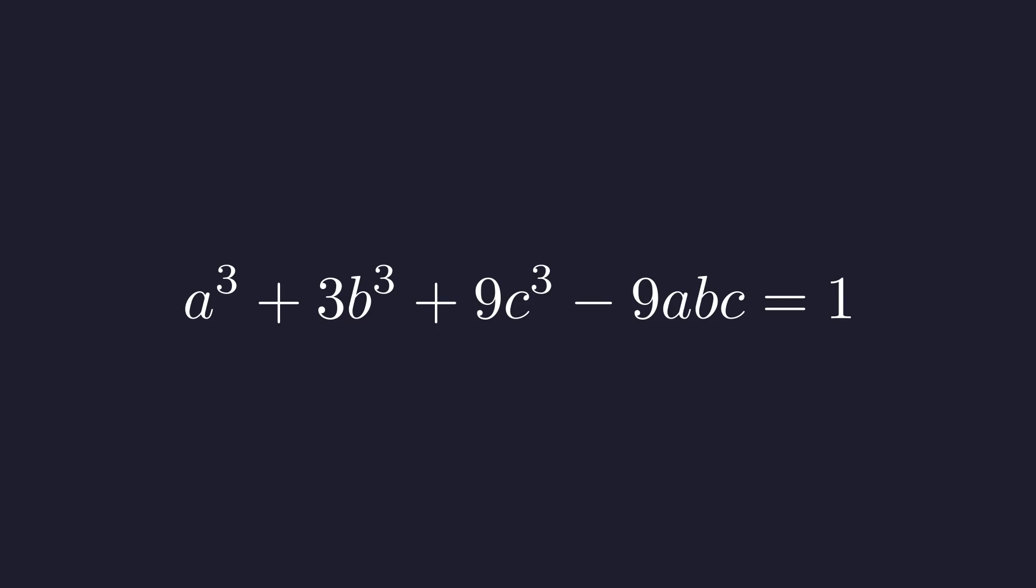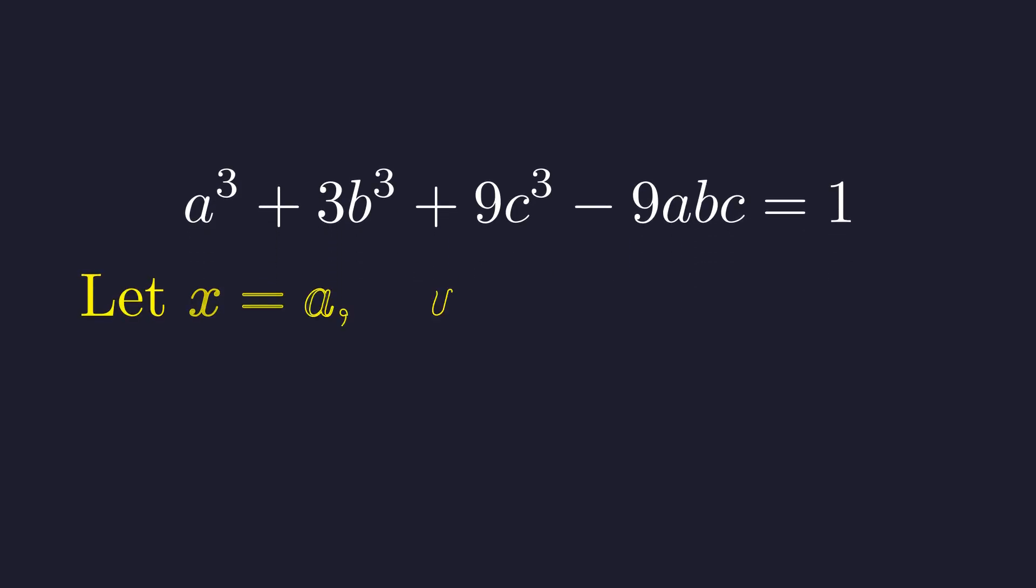Now, let's examine the structure of this expression. This form is highly suggestive of a specific factorization involving cube roots. Consider the following substitution. Let x equal a, y equal b times the cube root of 3, and z equal c times the cube root of 9.